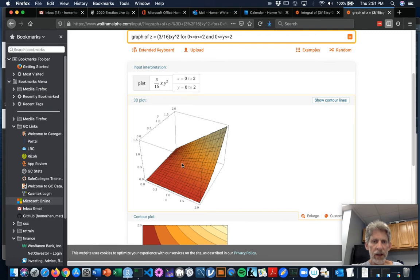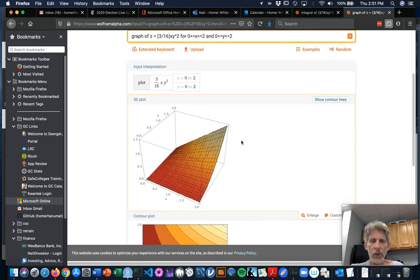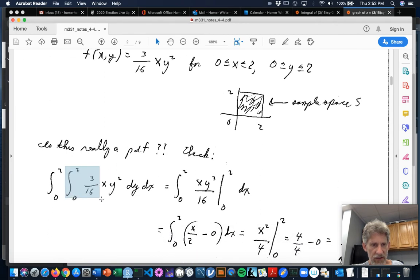And this direction going straight up is the positive z-axis. And this stuff here is the surface z equals 3/16th xy squared. And so, as you can expect, the bigger x and y are, the higher z is. And so, it's kind of like coming up like that. And so, you know, we're trying to show that the total volume underneath that surface over that square in the xy plane is 1.